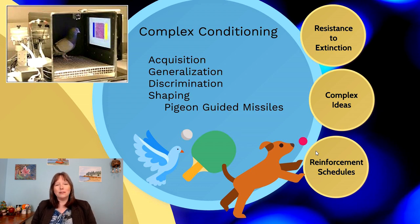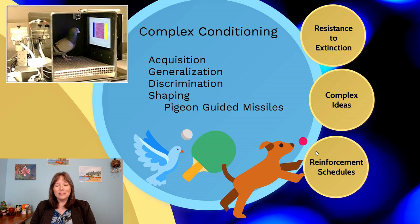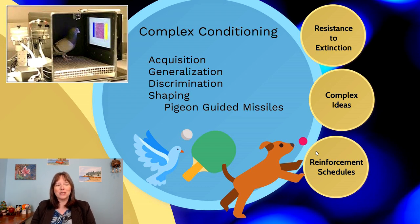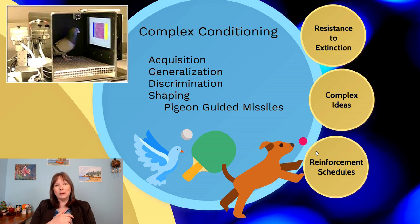There's also generalization — the idea that when you learn something, like how to write in one book, you'll learn to write in other books the same way, or tie one pair of shoes and you'll learn how to tie another pair. And there's also discrimination: you learn that in some situations a behavior is appropriate and in others it's not. We learn early on in preschool how to use different tones of voice with kids versus adults.